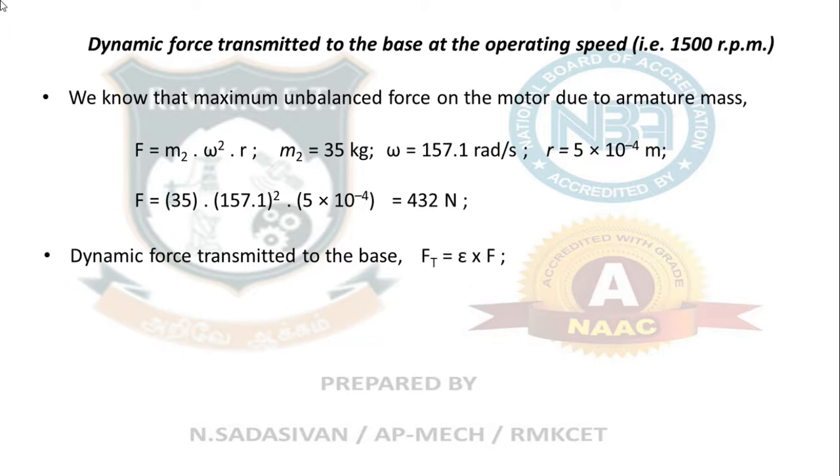Dynamic force transmitted to the base equals epsilon times F. What is this F? F is your unbalanced disturbing force created by this armature, because it is 0.5 millimeter offset from the center of gravity. It is creating 432 Newton. Out of this 432 Newton, one-eleventh of this is transmitted to the foundation. That is your epsilon. Multiply that 1/11 to this 432, you will get the force transmitted to the foundation. Very simple logic.